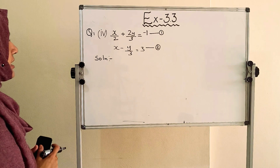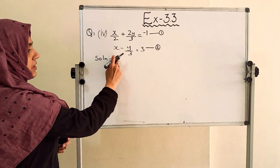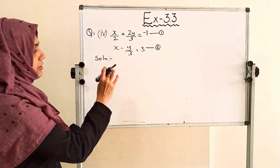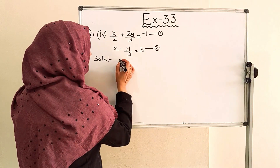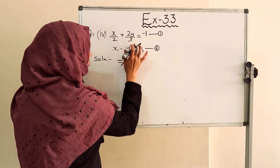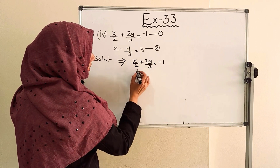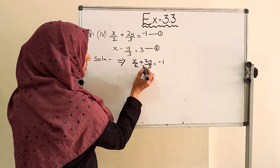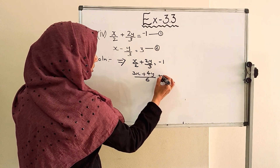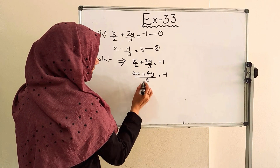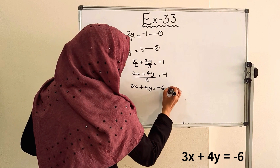Next is Roman number 4: x by 2 plus 2y by 3 equals minus 1, and x minus y by 3 equals 3. These are equation number 1 and equation number 2. First, we remove the fractions. For equation number 1, the LCM of 2 and 3 is 6. Cross multiplying: 3x plus 4y over 6 equals minus 1, so 3x plus 4y equals minus 6. This is equation number 3.